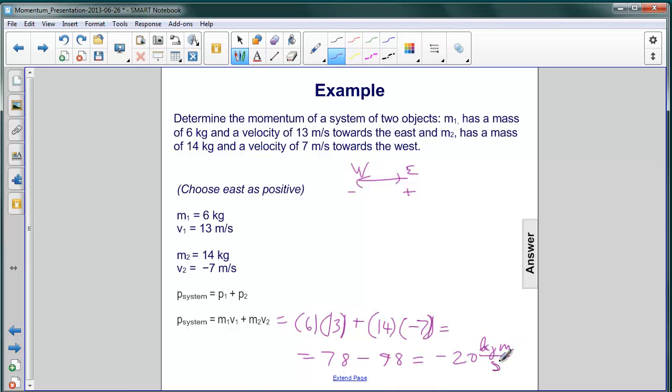So what's important here is notice the sign. In this case, the object moving to the west, although moving slower, had a much larger mass and hence a much larger momentum than the one moving to the east. And hence we get that result, negative 20 kilogram meters per second.